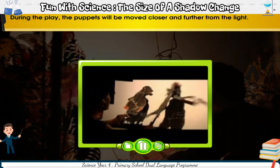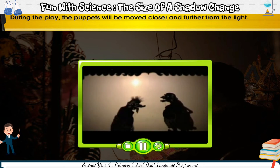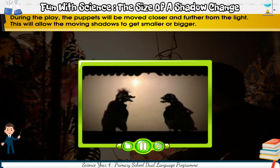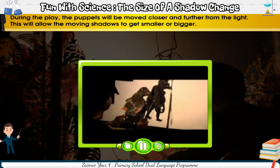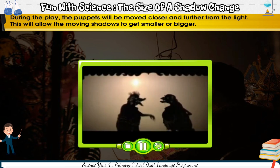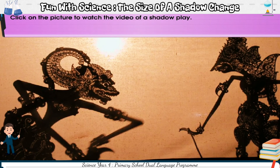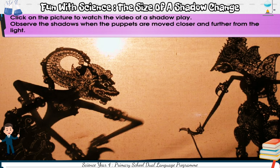During the play, the puppets will be moved closer and further from the light. This will allow the moving shadows to get smaller or bigger. Click on the picture to watch the video of a shadow play. Observe the shadows when the puppets are moved closer and further from the light.